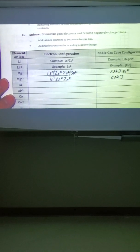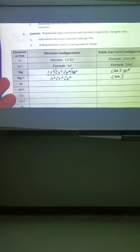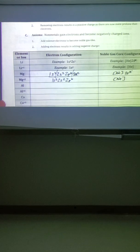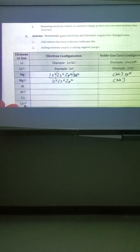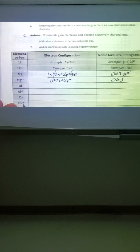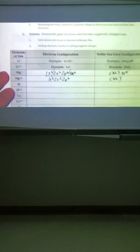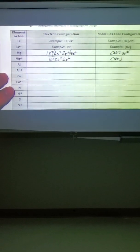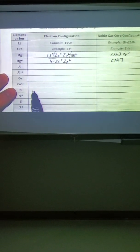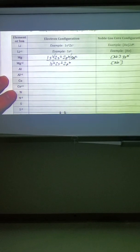Cobalt's going to be tricky. That's a curveball because it's a transition metal. So in that one, just make sure that you take away from the 4s2 first, then dig into the 3d electrons. But I'll save that one. That's a good teaser. Let's do one more that's negative, and then we'll look at some questions.